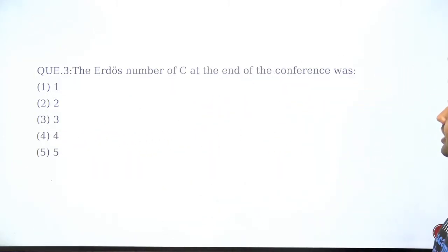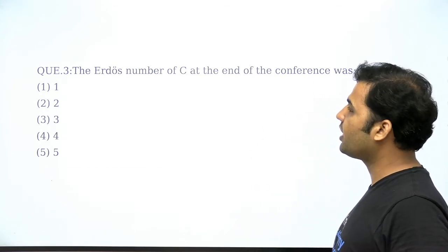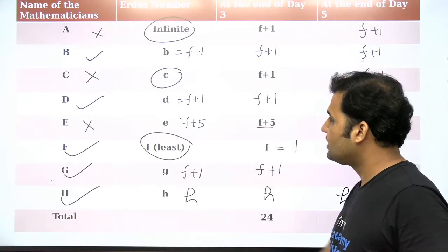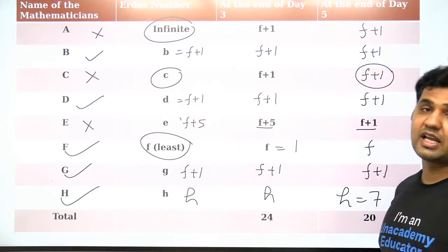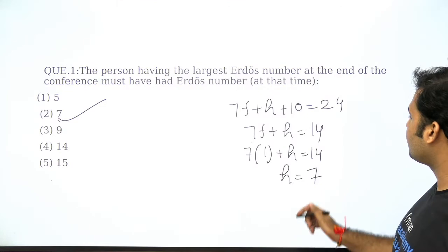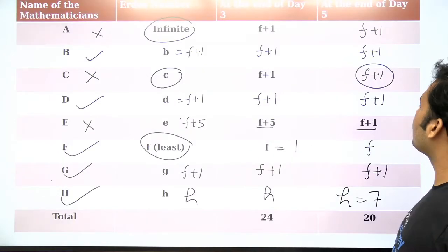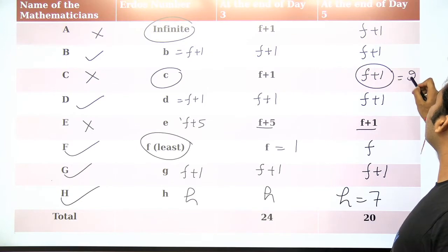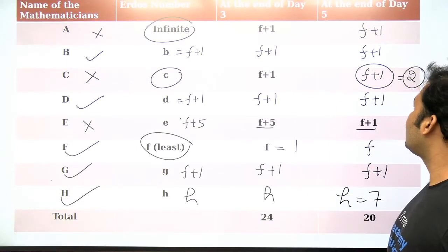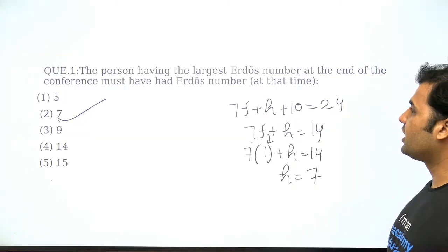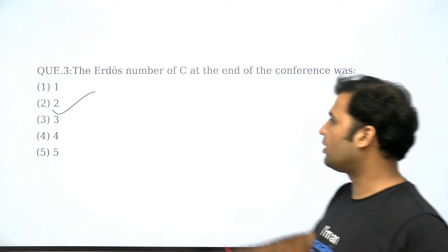Let's look at the next question: the Erdos number of C at the end of the conference. C ka Erdos number kya hai at the end of the conference? C is having an Erdos number of F+1, and F ka value humne first question mein find out kiya tha. F ka value is 1. So if you put F's value as 1, C ka Erdos number will be 1+1 = 2. Therefore, the answer to the question is option number 2.